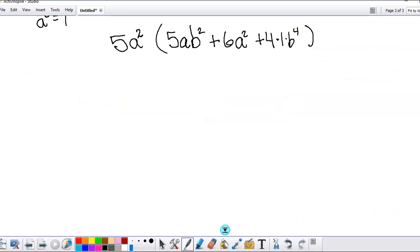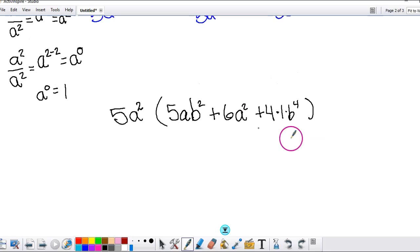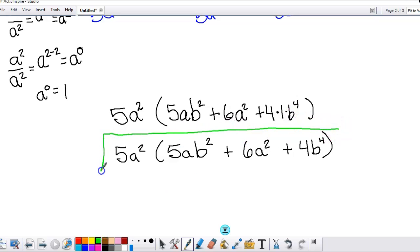We have our 5a² times (5ab² plus 6a² plus 4b⁴). That is our final answer if we were asked to factor out the greatest common factor.